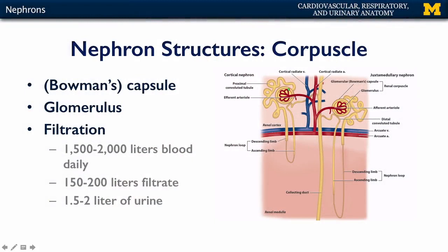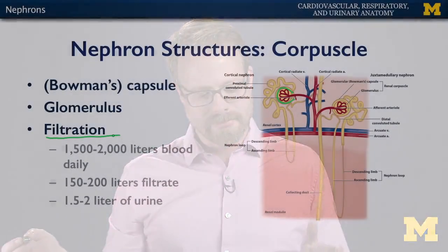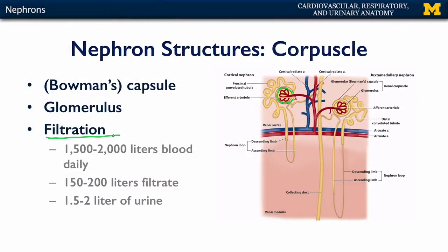Let's take it step by step through the nephron, starting at the renal corpuscle. We have the renal capsule, also known as Bowman's capsule, surrounding the glomerulus, and it is here that the process of filtration occurs. Filtration is very important because we're taking blood and turning it into filtrate — you can think of filtrate as pre-urine. Given the amount of blood flow through the kidney, approximately 1,500 to 2,000 liters of blood flow through the kidneys daily, and filtration at the capsule reduces that down to about 150 to 200 liters of filtrate.